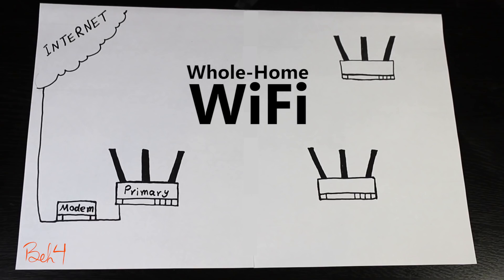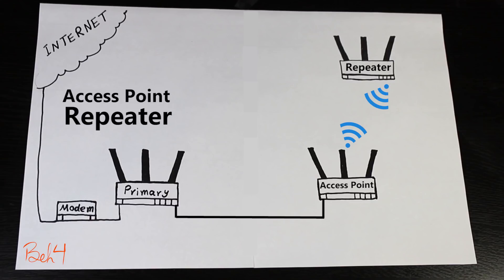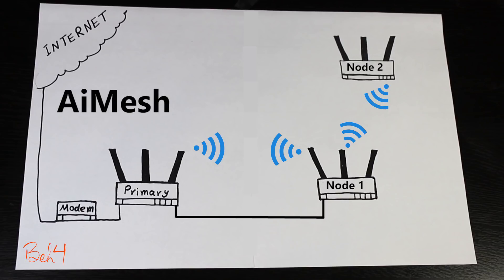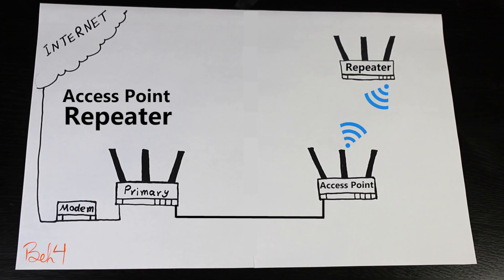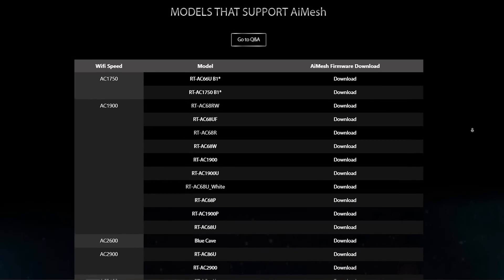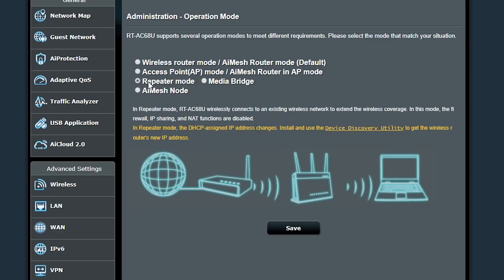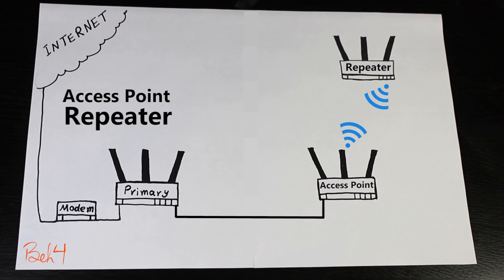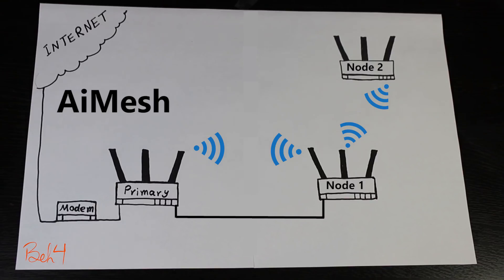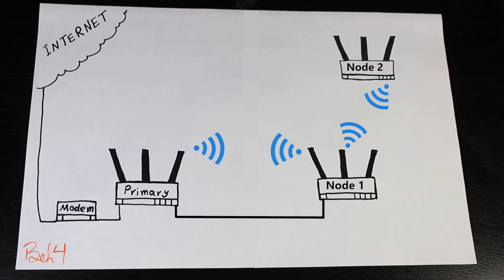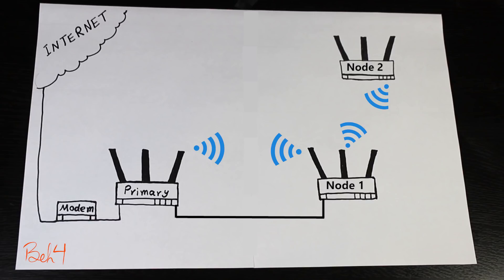That was pretty much it. I hope you found this video useful. I tried to highlight the similarities and differences of each system — the purpose was not to say one is good or bad, because both have their own advantages and disadvantages. Personally, I prefer the access point and repeater features because I like more manual control. But AI Mesh is very easy to set up if you don't want to deal with advanced technical stuff. Also, if your Asus routers don't support AI Mesh but do have access point and repeater features, you can still set up a very similar system. Thank you for watching — please like, share, and subscribe if you want to see more videos like this.